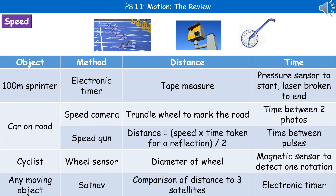Welcome to our review on motion. The first thing we're going to think about is how we can work out the speed of different objects. In order to do this we need to be able to measure the distance and the time.